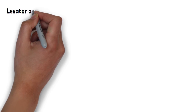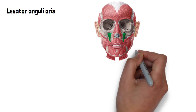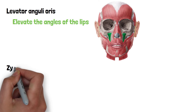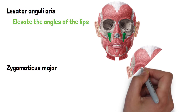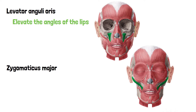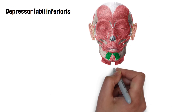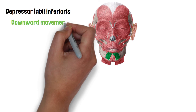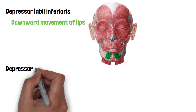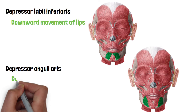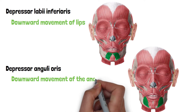The movement of the angle of the mouth is also important since it indirectly moves the lips as well. The muscle that elevates the angle of the mouth is the levator anguli oris. Another important muscle is the zygomaticus major, which makes us smile by pulling the angle of the mouth upwards. The downward movement of the lips is caused by depressor labii inferioris, while the downward movement of the angle of the mouth is caused by depressor anguli oris muscle.